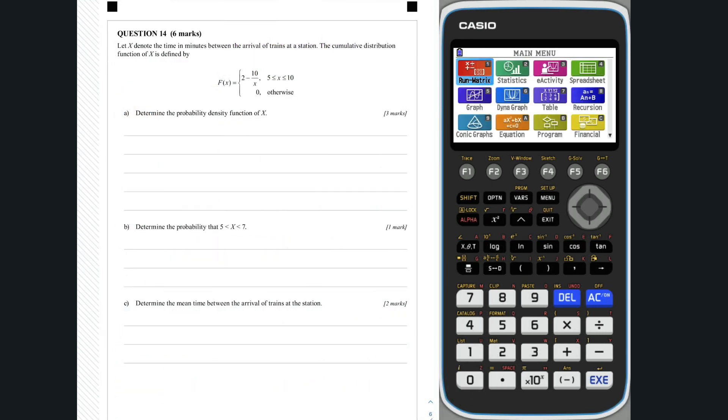Question 14a. Firstly, note that capital F of x represents the cumulative distribution function of x. Let the probability density function of x be equal to f of x. Therefore, the cdf of x can be differentiated to determine f of x as follows.